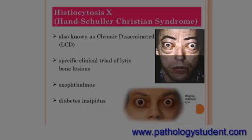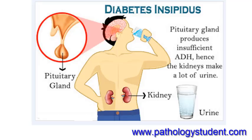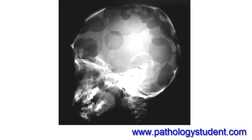The classical triad consists of: (1) exophthalmos from Langerhans cells accumulating behind the eye; (2) diabetes insipidus from involvement of the pituitary stalk; and (3) lytic bone lesions in the skull from accumulation of Langerhans cells in the calvarium.